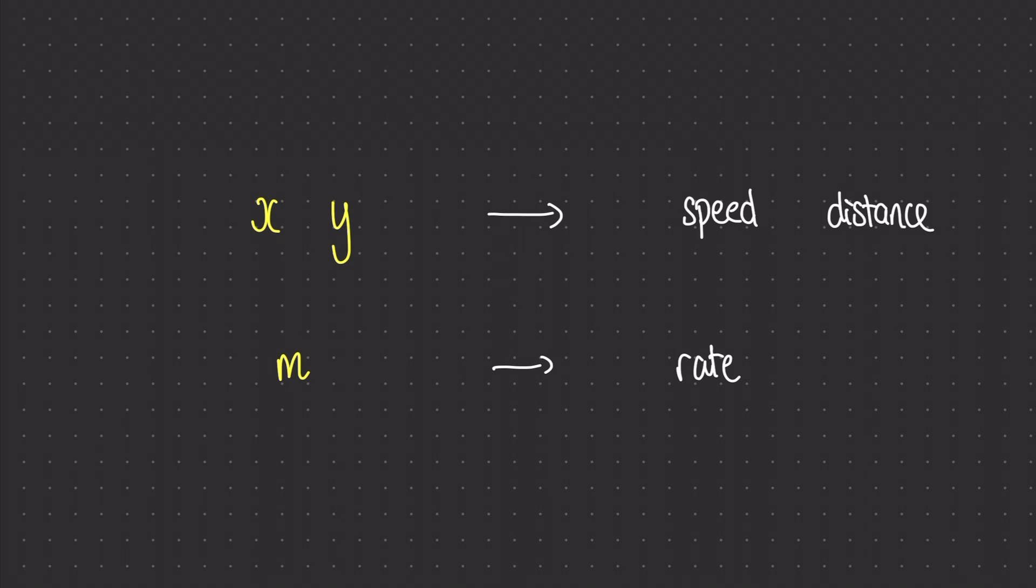Now it's pretty straightforward. Basically the x and the y variables that we had when we were just learning how to use straight line graphs are now going to be replaced by real life values such as speed and distance.